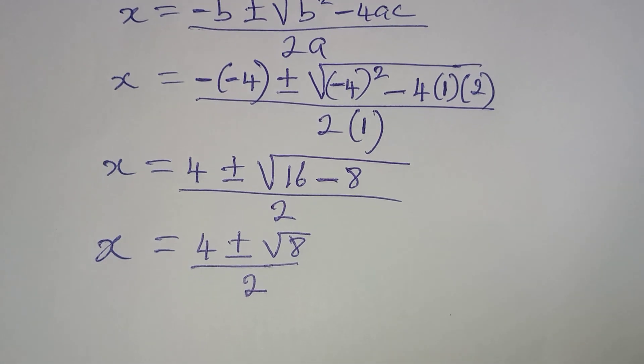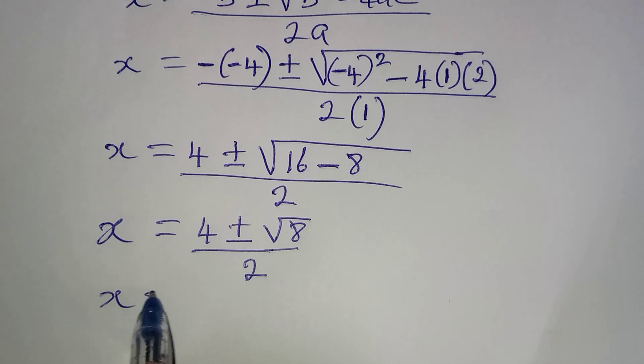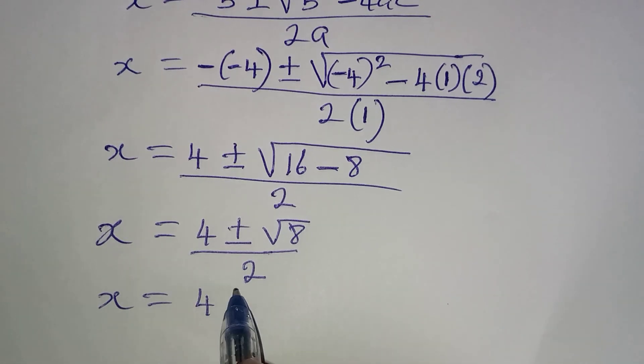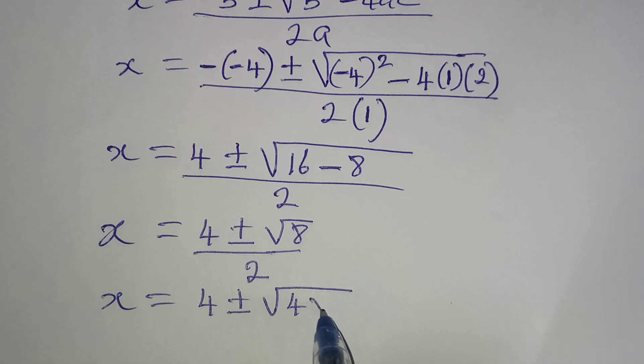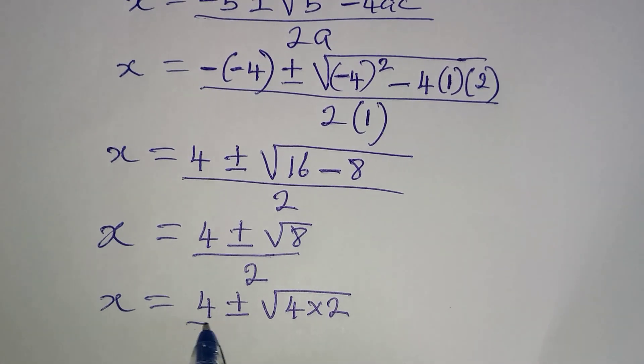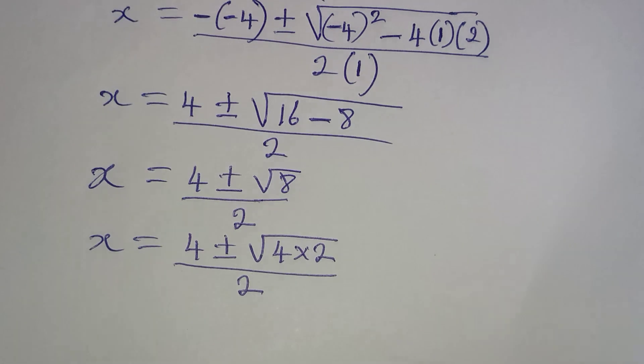But do not forget that we can break this down so that x will be equal to 4 plus or minus, 8 is the same thing as 4 times 2. And then we have over 2. Now 4 here is a perfect square, so we can get its square root.